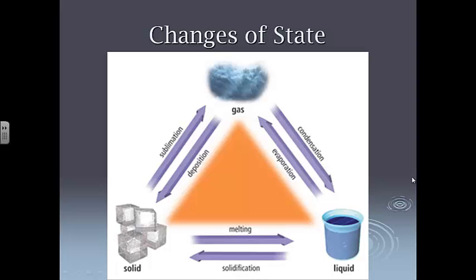Here is a nice chart that I like that just kind of summarizes all the changes of state. You've got your solid, you've got your liquid, you've got your gas, and it just gives the terms for going between all these states. For example, going from a solid to a liquid, you have melting. Going from a liquid to a solid, you have a term called solidification. A lot of us may also just call that freezing, so feel free to also just call this freezing.